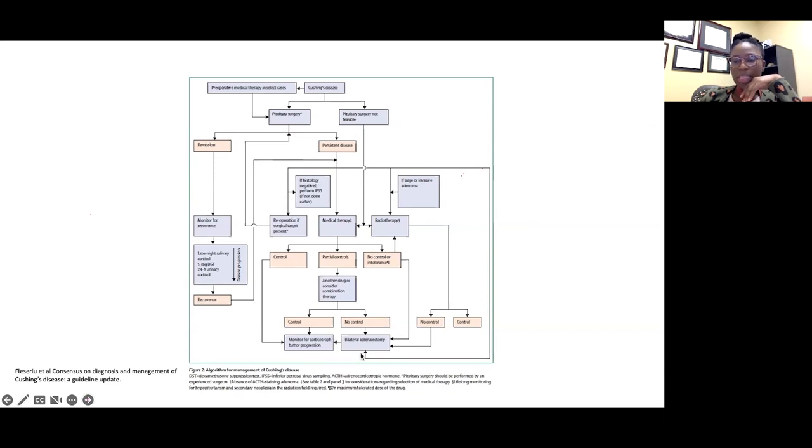Bilateral adrenalectomy is the last option. What BLA does is treat the downstream effect—the effect at the adrenal glands is what you're treating with BLA.